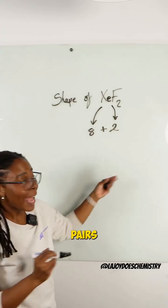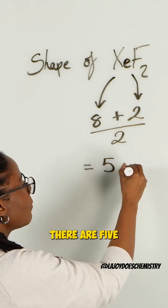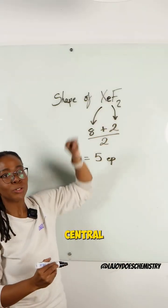Now to find out the electron pairs, we divide that by two and that tells us that there are five electron pairs around this central xenon atom.